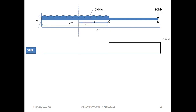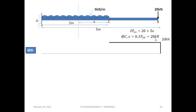Taking a section XX, I write the shear force expression considering all forces to the right side. SF_xx = 20 (downward positive) + 5·x (UDL acting downward). At C, x equals zero, so shear force at C is 20 kilonewton, which checks mathematically. This expression is valid between C and A, between limits 0 and 2 meters. At A, x equals 2 meters, substituting gives shear force at A = 30 kilonewton. The nature is an inclined straight line.